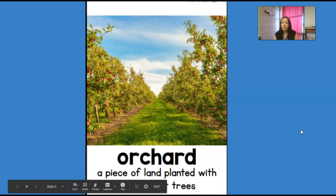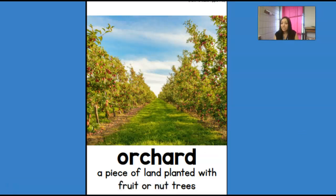Here are some vocabulary words that we want to make sure you understand while we read the book. Our first word is orchard — an orchard is a piece of land where trees are planted, like fruit or nut trees. This is a picture of an apple orchard. People often go to apple orchards to pick apples, especially in the fall.